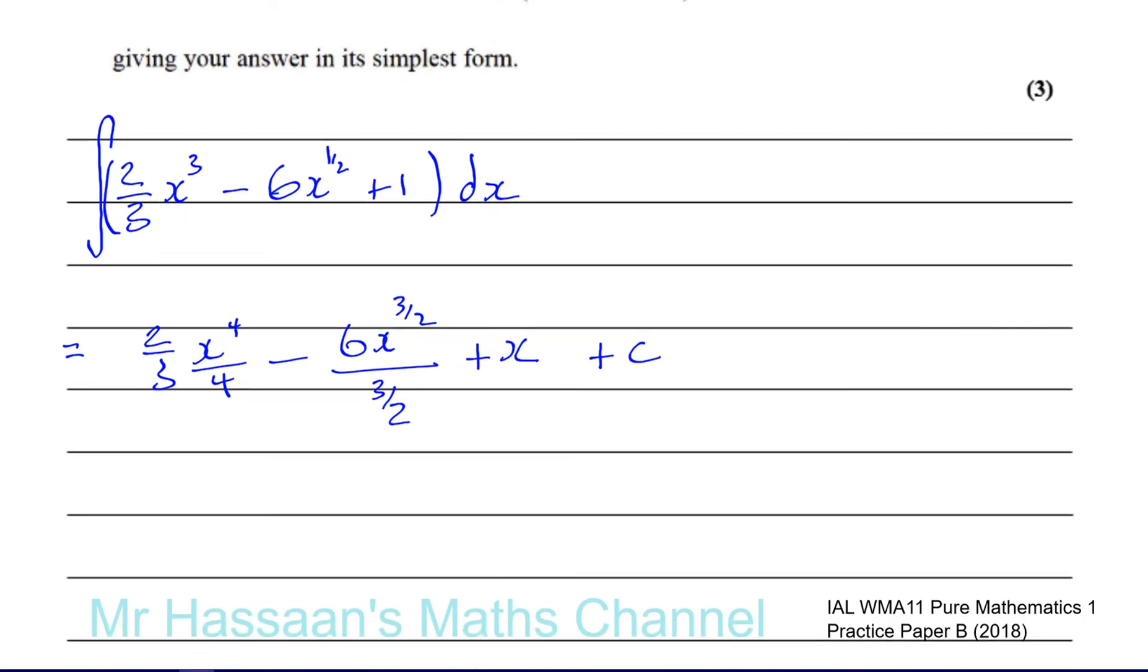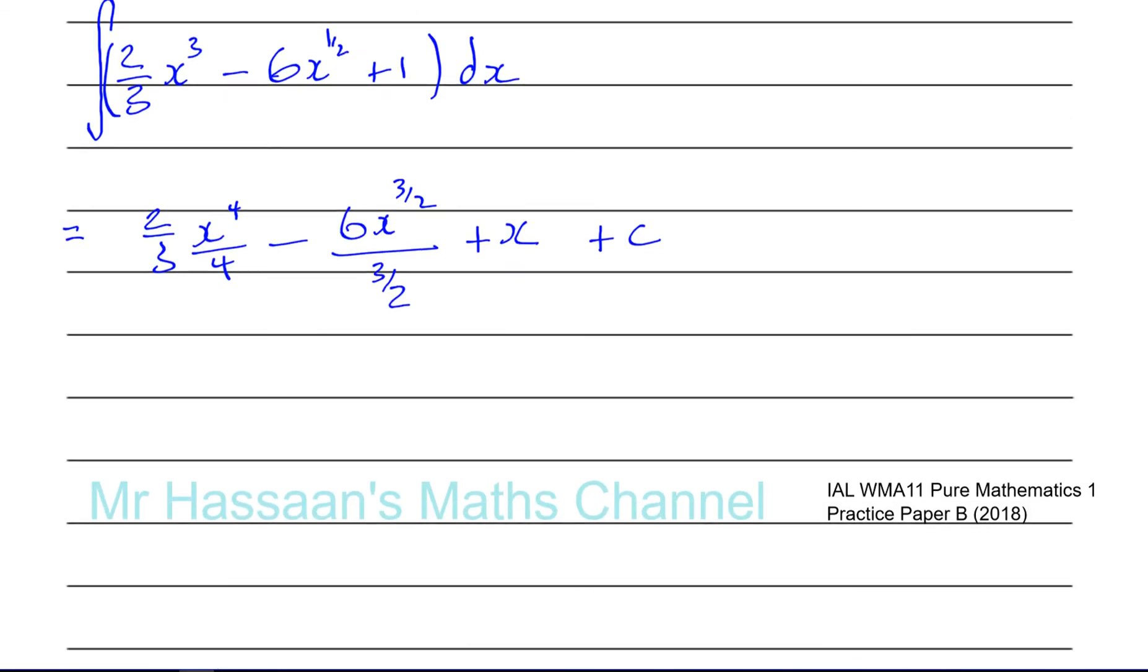Okay, so now we're going to simplify this. You can see that the 2 and the 4 cancel out. So you're left with basically 1 sixth of x to the power of 4. And now what happens here is, when you divide by a fraction, it means you multiply by the reciprocal. So this is like 6 times 2 over 3. 6 divided by 3 over 2 is 6 times 2 over 3. And they cancel out here. So you're left with 4, x to the power of 3 over 2. And you've got plus x and plus c.